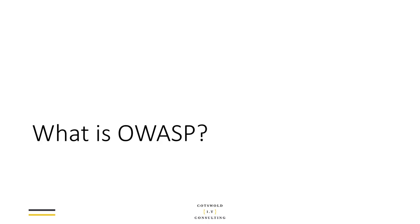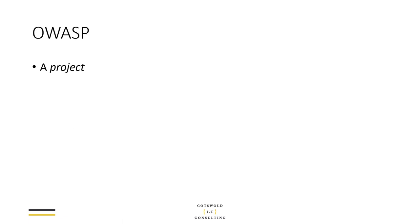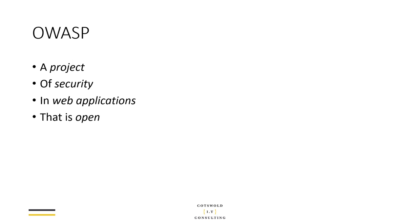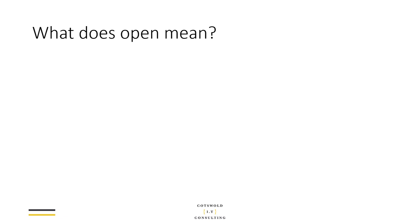So let's start with OWASP itself. What is OWASP? Well, if we say it backwards, we'll work out what it is. OWASP is a security project to do with web applications, and that is Open — so it's the Open Web Application Security Project. It kind of explains what it is.